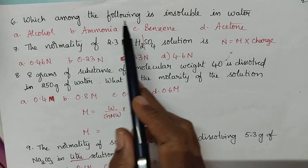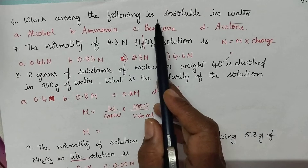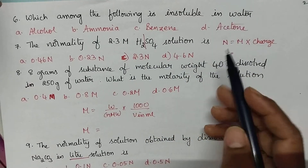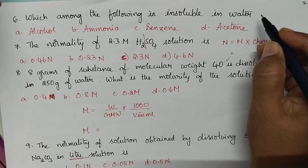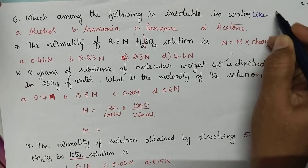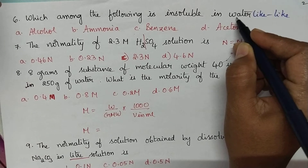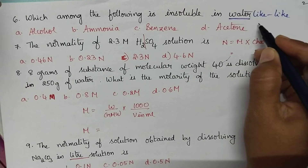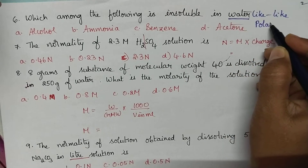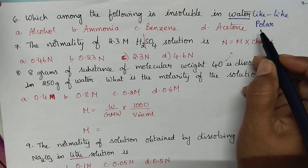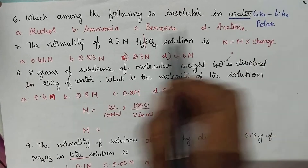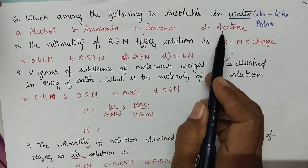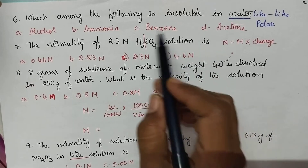Which among the following is insoluble in water? Like dissolves in like — water is a polar solvent, so polar substances are soluble in water. We have to identify which of the given options is non-polar. Benzene is non-polar and hence it is insoluble in water.